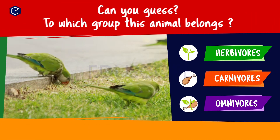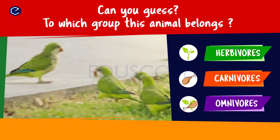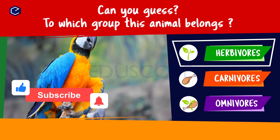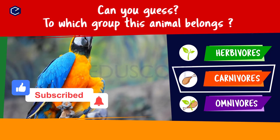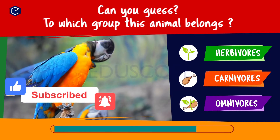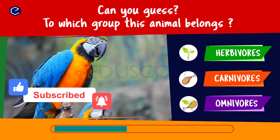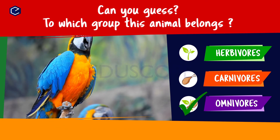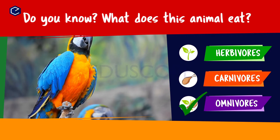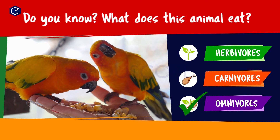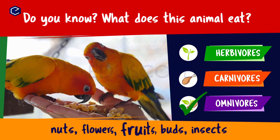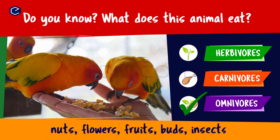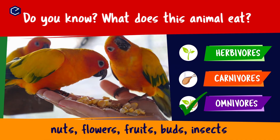Can you guess to which group this animal belongs? Herbivores, carnivores, omnivores. Do you know what this animal eats? A parrot eats nuts, flowers, fruits, buds, insects. So parrot is an omnivore.